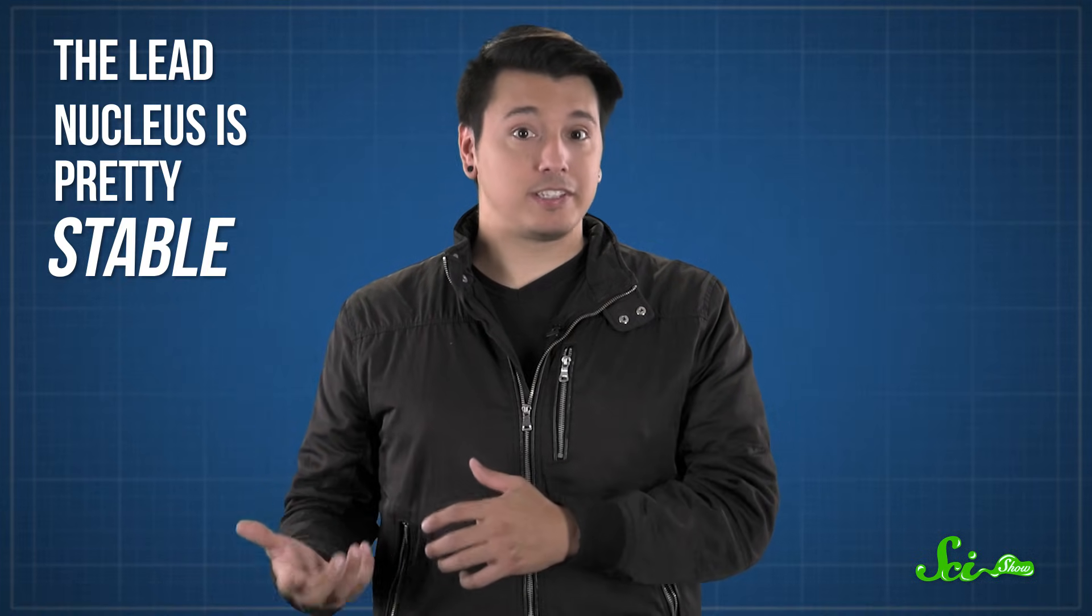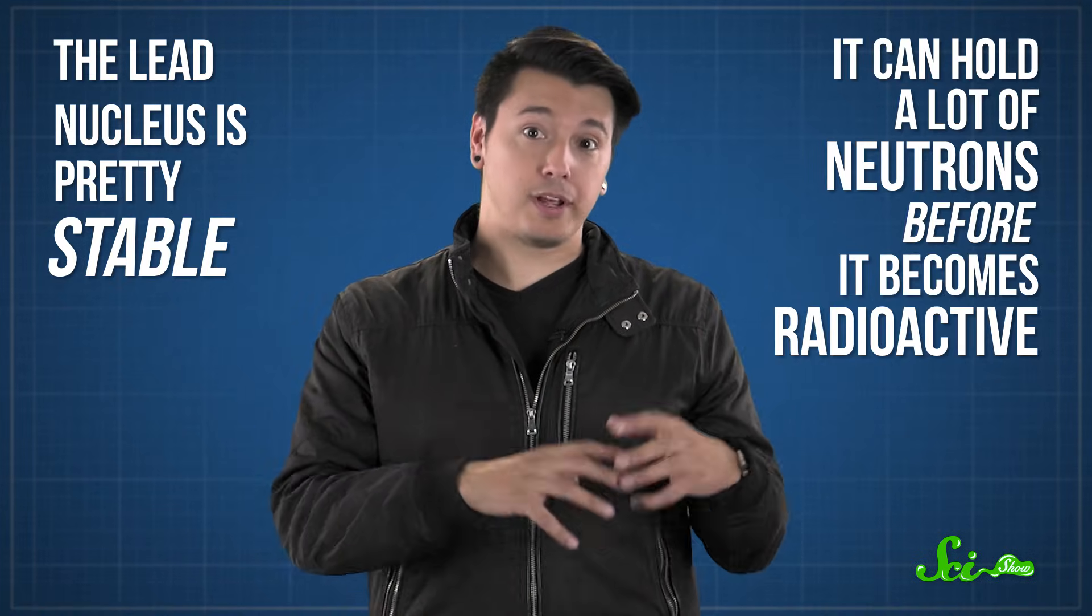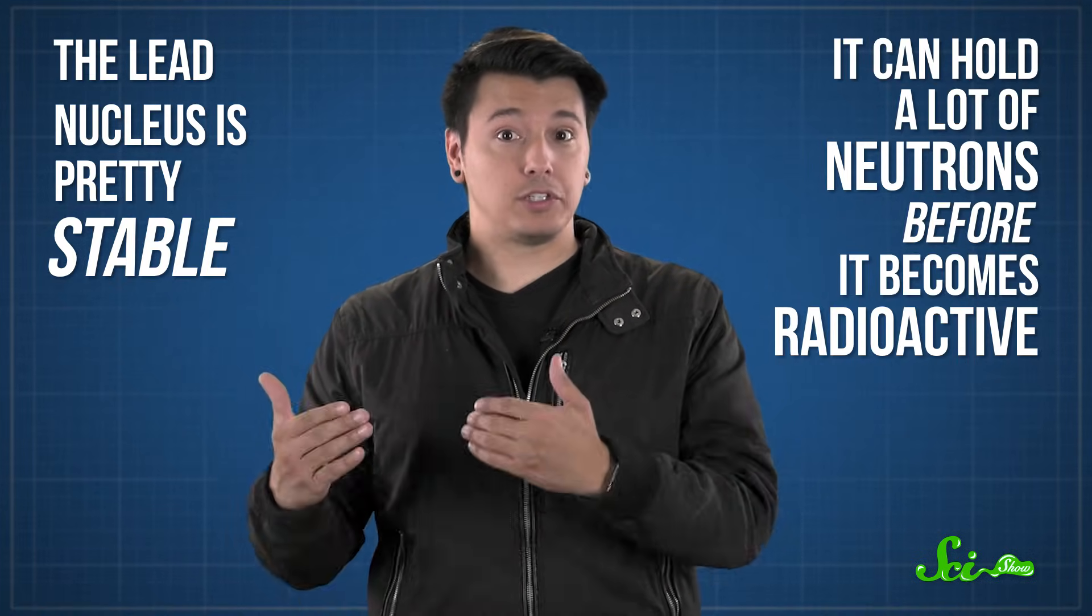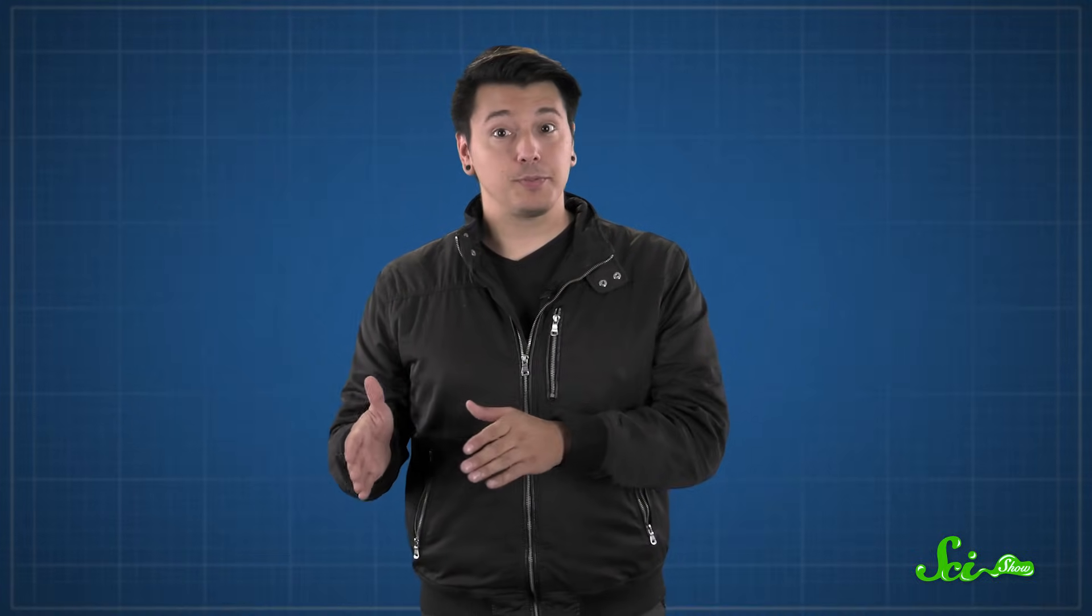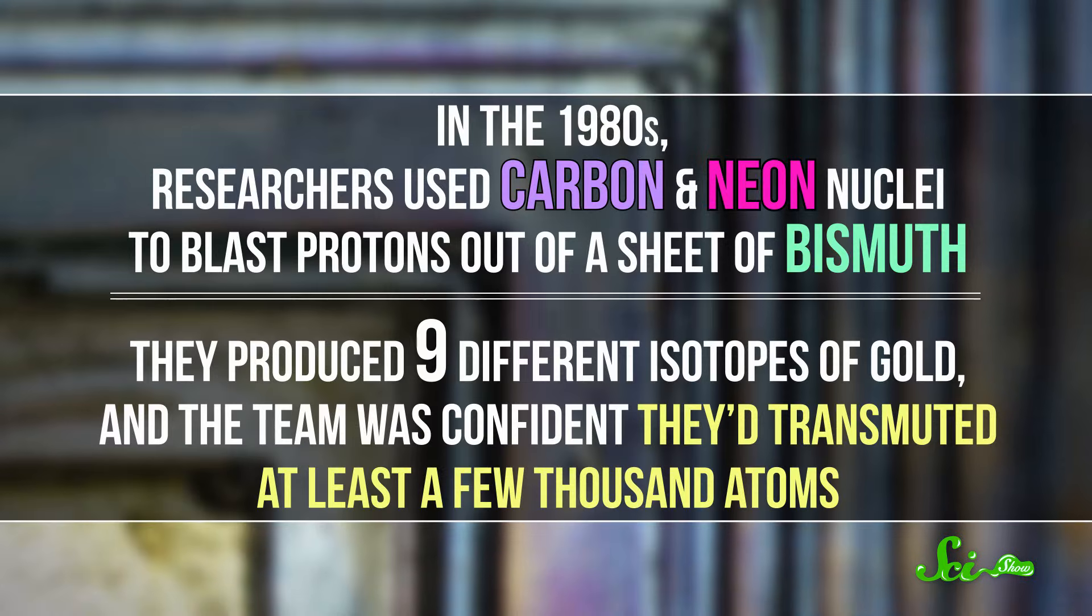Turning lead into gold is a lot harder, though. The lead nucleus is pretty stable. It can hold a lot of neutrons before it becomes radioactive, which is why we use it to shield nuclear reactors. But once it does become radioactive, it undergoes a type of decay that makes it gain a proton, turning it into an isotope of bismuth. And we do know how to turn bismuth into gold. In the 1980s, researchers used carbon and neon nuclei to blast protons out of a sheet of bismuth. They produced nine different isotopes of gold, and the team was confident that they'd transmuted at least a few thousand atoms.